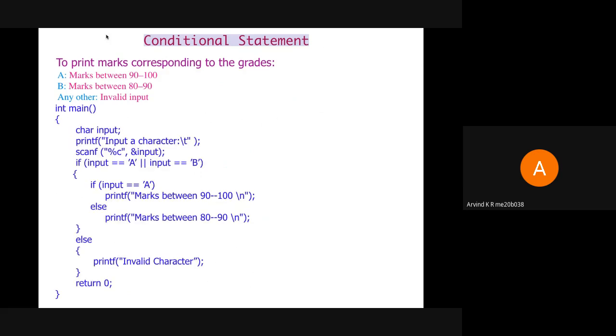Here we are printing marks corresponding to grades. First we scan in the grade. If the grade is 'a', we print 90 to 100. If it's 'b', we print 80 to 90. For any other input, we print it as invalid character. We have an outer if statement that checks if the input is either 'a' or 'b'. Within that if, we have an if-else part: if the input is 'a', we print marks between 90 to 100; else the input should be 'b', so we print 80 to 90. In the outer else part, when the input is neither 'a' nor 'b', we print that it is an invalid character.